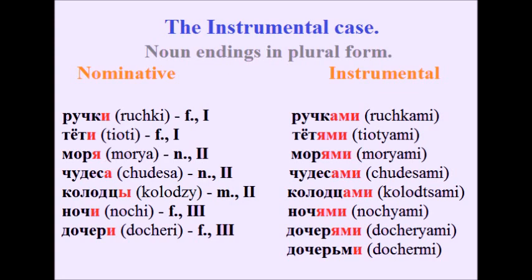Plural endings: 'Pens' — ручки → ручками. 'Aunts' — тёти → тётями. 'Seas' — моря → морями. 'Miracles' — чудеса → чудесами. 'Wells' — колодцы → колодцами. 'Nights' — ночи → ночами. 'Daughters' — дочери → дочерями or дочерьми.